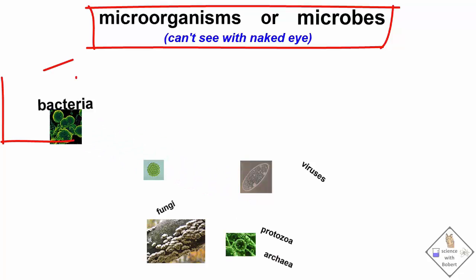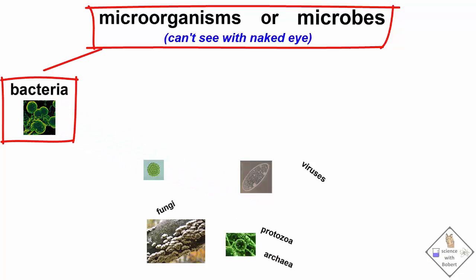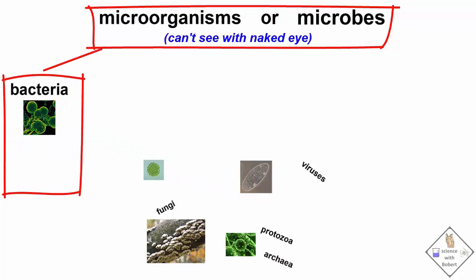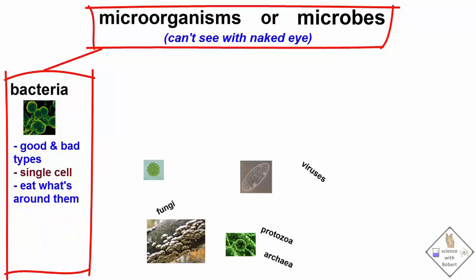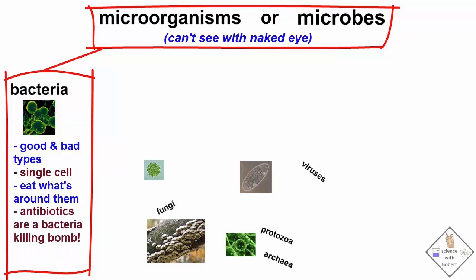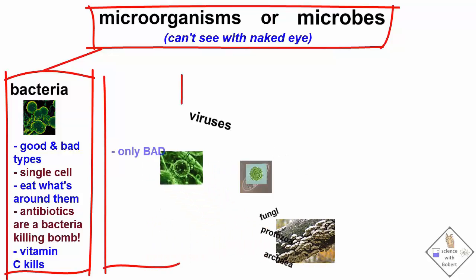There is good and bad bacteria. Bacteria are single cells that eat what is around them. Antibiotics are like an atomic bomb for killing bacteria. Vitamin C works at killing bacteria too, but acts more like a bullet and gets destroyed in the process.